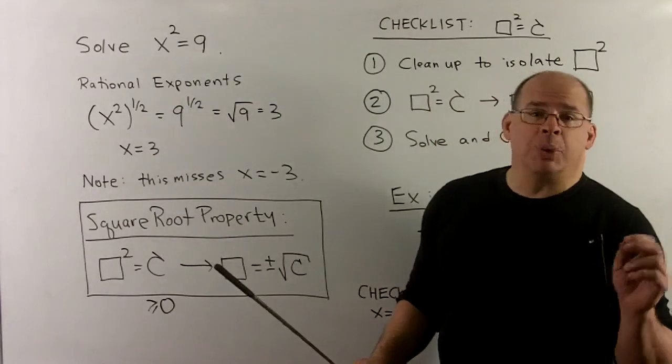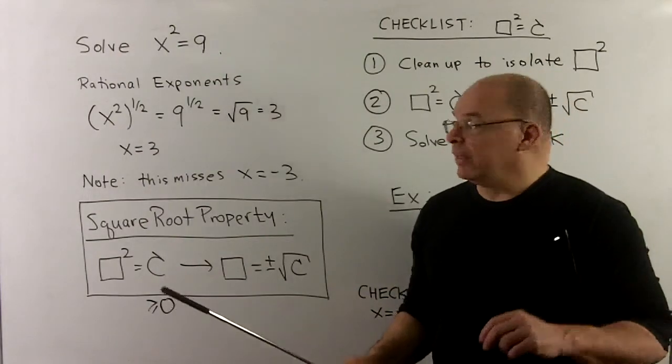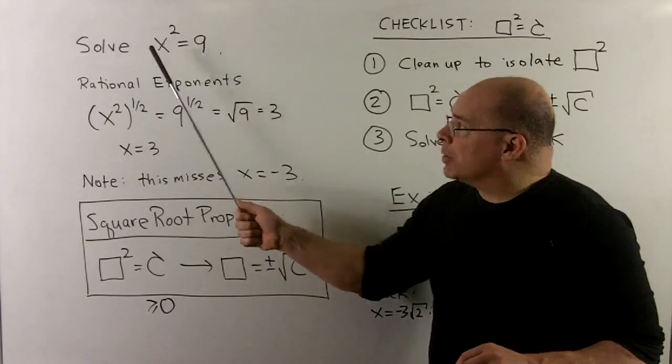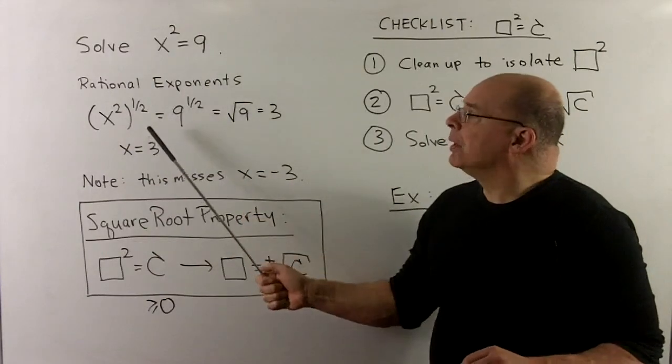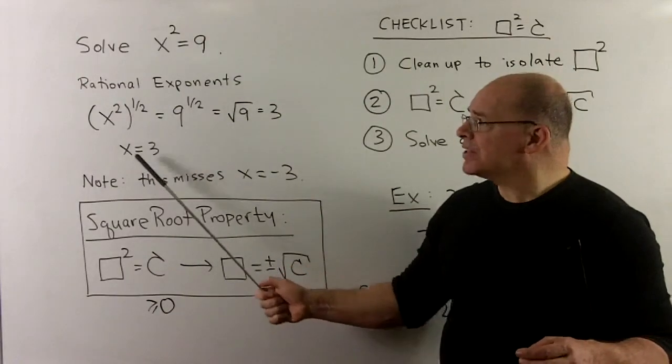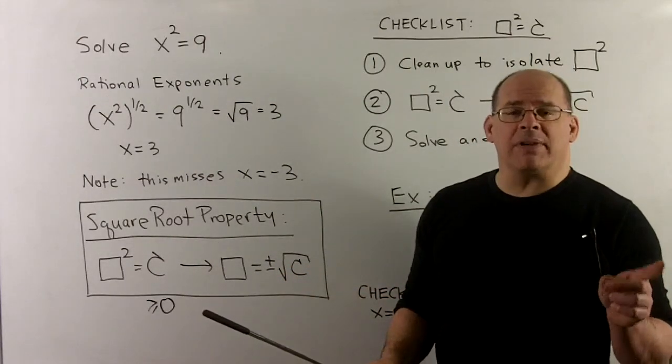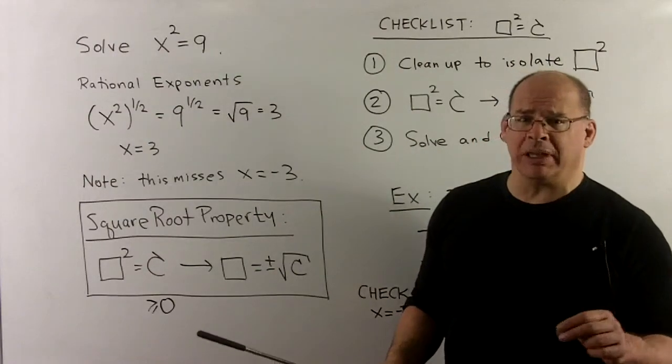Now, suppose we wanted to solve the equation x squared equal to 9. One method, I could raise both sides to the 1 half power to get rid of that 2. Power rule, two times a half is going to go to a 1, which is an x. And if I've got an equality and I perform the same operation on both sides, what comes out should also be equal.